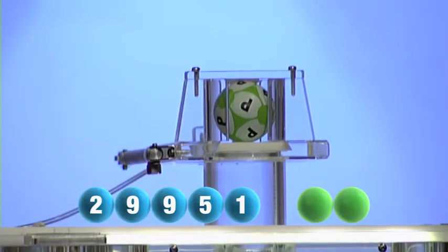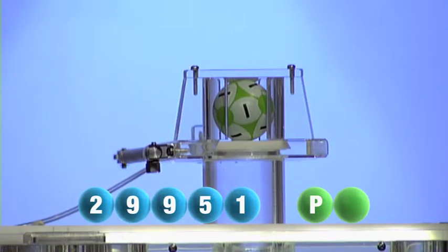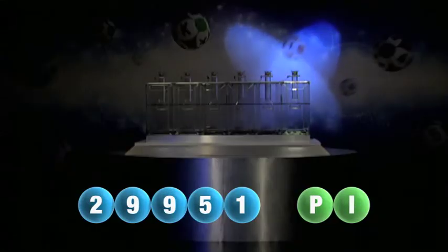The first letter drawn is P. That's letter P. It's now time for the second and final letter to complete today's winning combination. The final letter for today is I. I is the final letter.